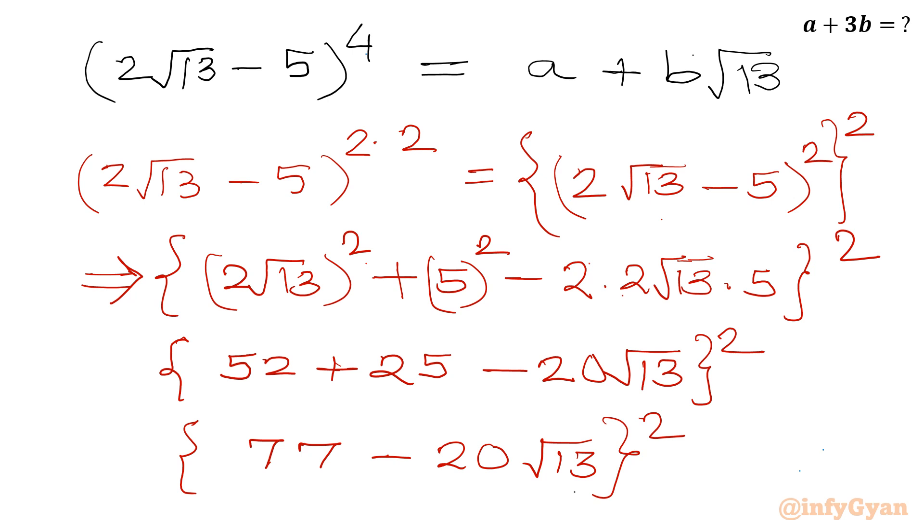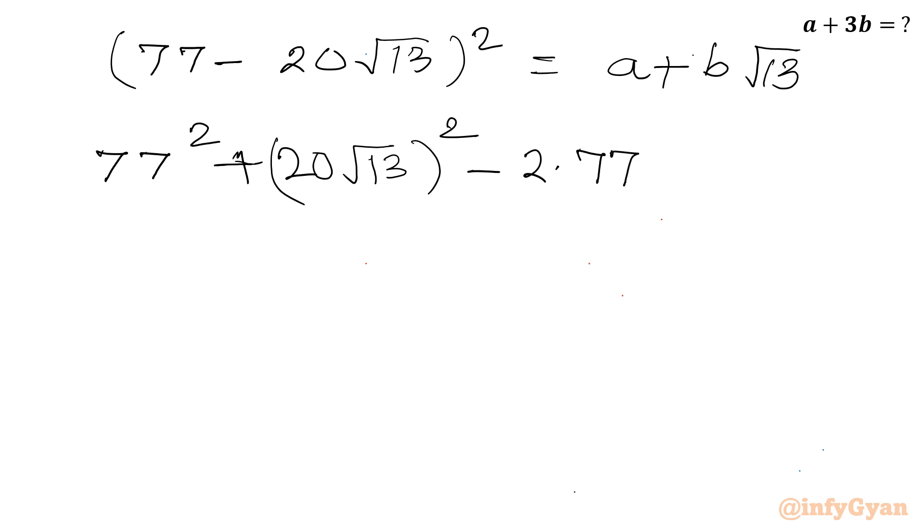This is our LHS. Now we have to find out in the form of a plus b root 13. Let us consider squaring of LHS first. So 77 minus 20 root 13 whole square. This is equal to a plus b square root 13. So I will write here a minus b whole square formula. A square plus b square. So 20 root 13 whole square minus 2 times ab. So 77 times 20 root 13. Now let us write all the value of big number 77 square. So 77 square is 5929. This value is 5200. Minus 2 times this value is 3080 root 13.